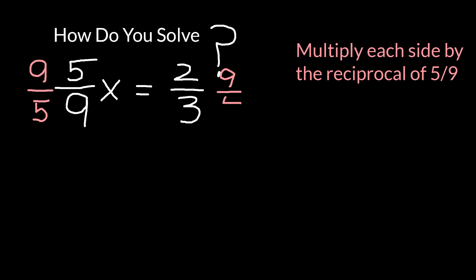So if I do it to one side, I have to do it to the other next to the x. This has the effect of canceling out the nine and the five. And that leaves us simply with x on the left hand side, which is what we're interested in.